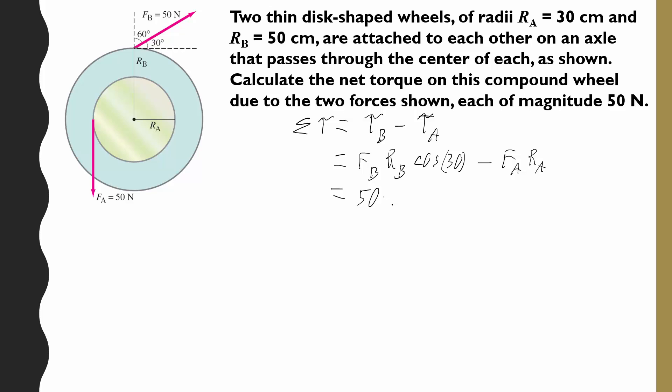If you go ahead and plug in numbers, you're going to have 50 for this force. The lever arm of B is 50 centimeters, so 0.5 meters, times cosine of 30, minus the same 50 newton force but a different lever arm here. This one is only 30 centimeters, or 0.3. This works out to be about 21.65. This works out to be exactly 15. So this works out to be 6.65.